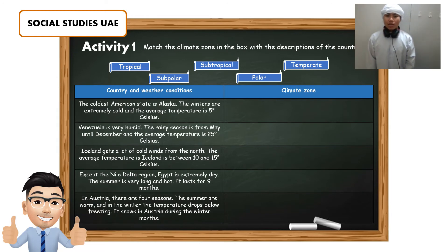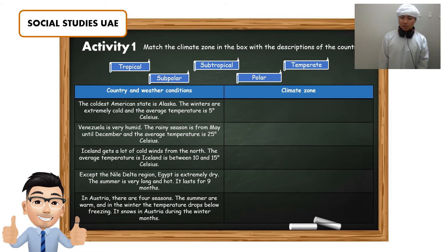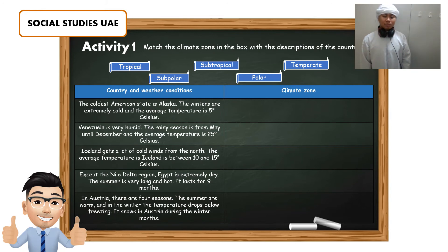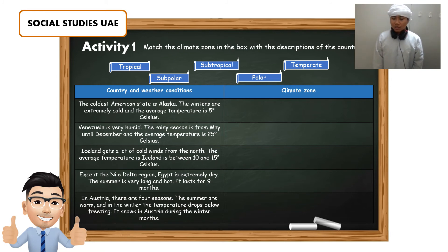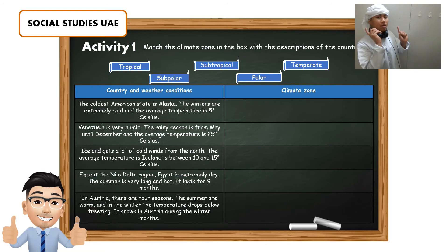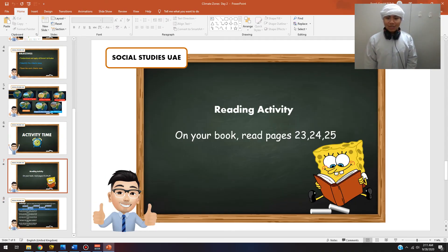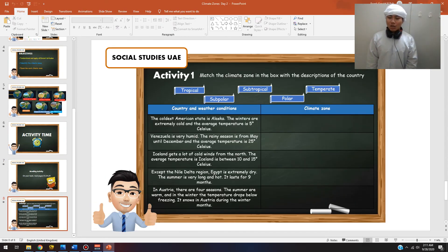For this activity, I want you to match the climate zone in the box with the descriptions of the country. You will see the different climate zones: tropical, subpolar, subtropical, polar, and temperate. On the left side you will see the country and weather conditions. Read and understand each of the weather conditions, and on the right side write down the climate zone.